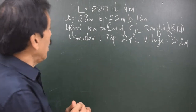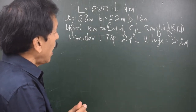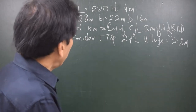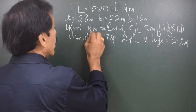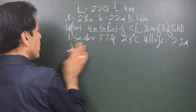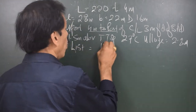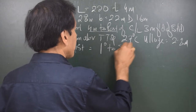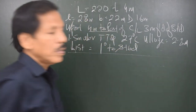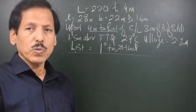Now that is the description of the ullage port and the tank. Let us see if we need any other information. Now let us say the list is 1 degree to starboard. This is what the question is, and we are going to do this question.